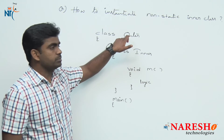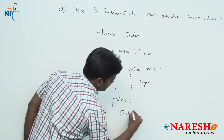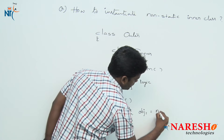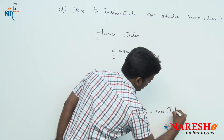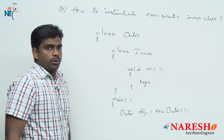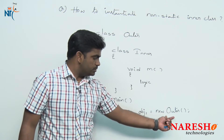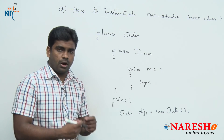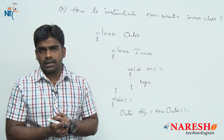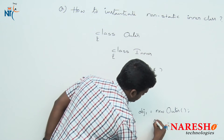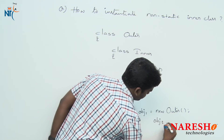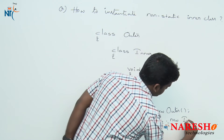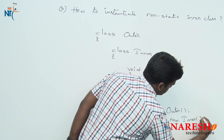First, we need to create an object for the outer class: OuterClass obj1 = new OuterClass(). We first create an object for the outer class, and then with the help of that outer class object, we create an object for the inner class — obj1.new InnerClass(). This dependency is what we call instantiation through the outer class.